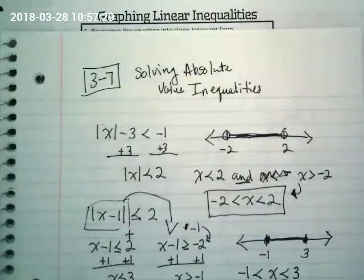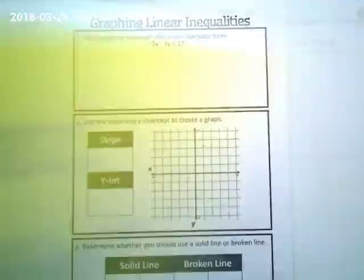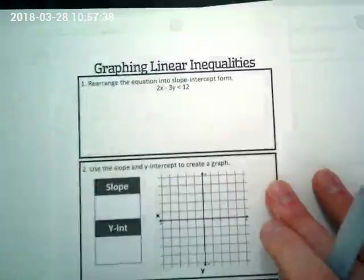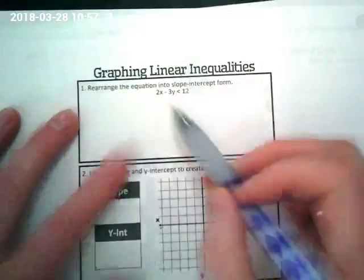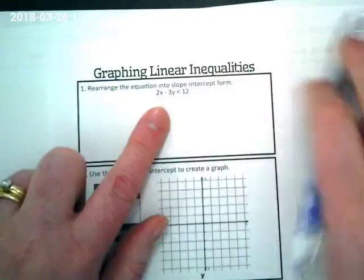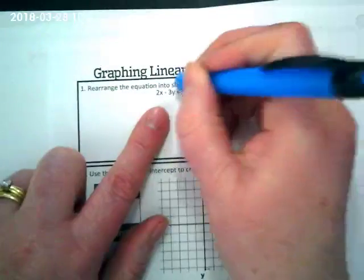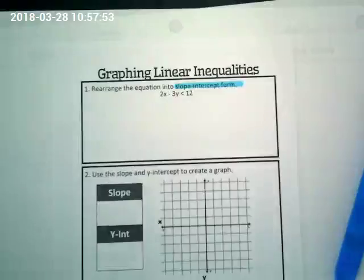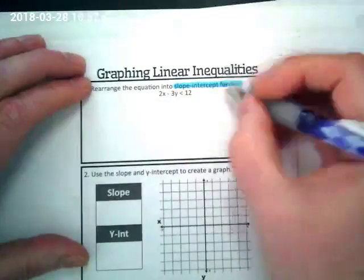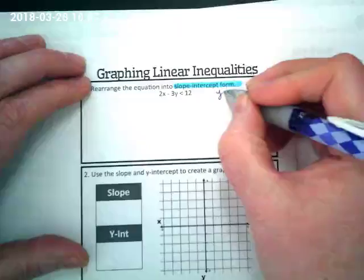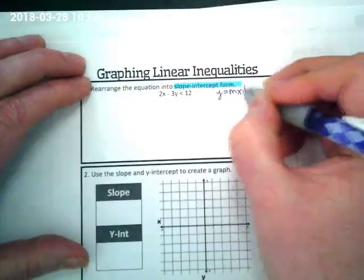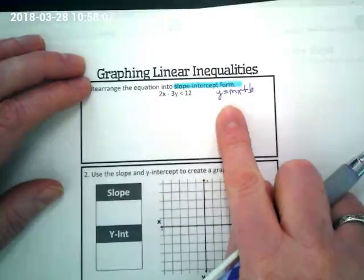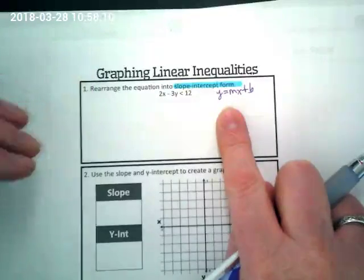I think in front of you, Faith. Okay. So we're going to start with learning how to graph inequalities on a coordinate plane. The first thing we want to do is get this into what form? Slope intercept form. Slope intercept form. And I saw a couple of you write slope intercept form on your paper when you were testing. What is slope intercept form? Y equals MX plus B.